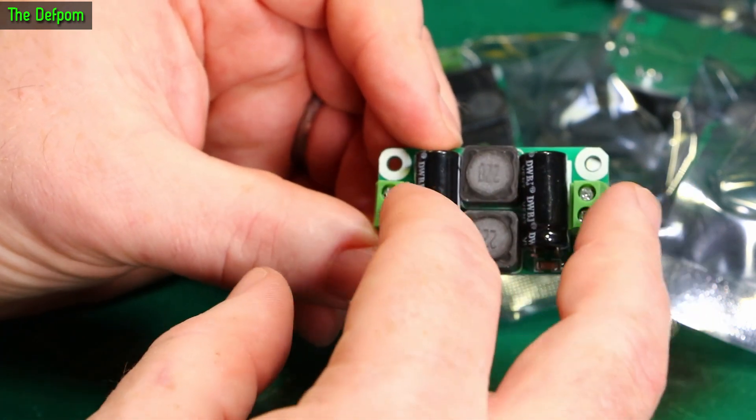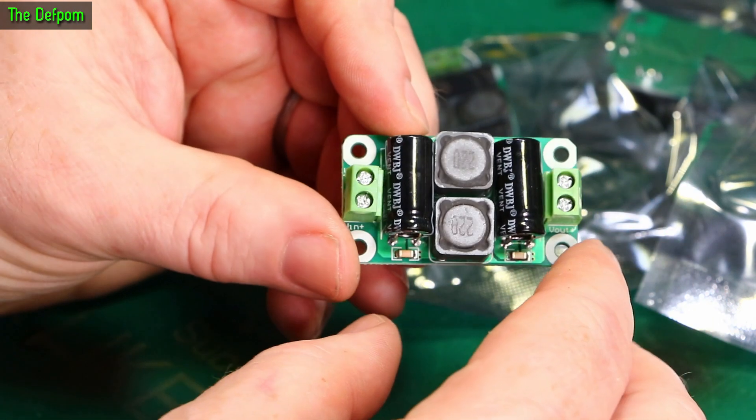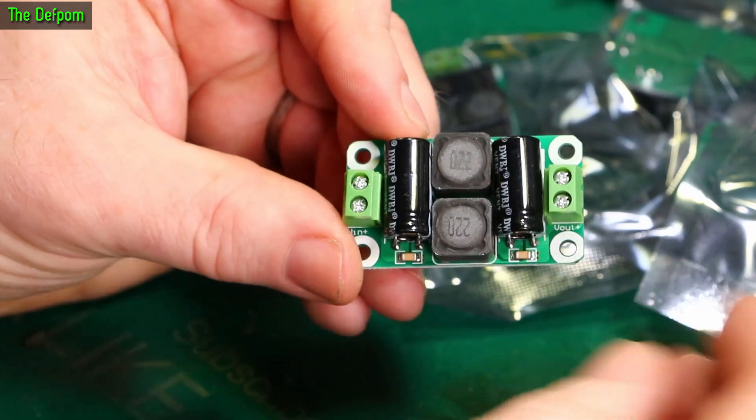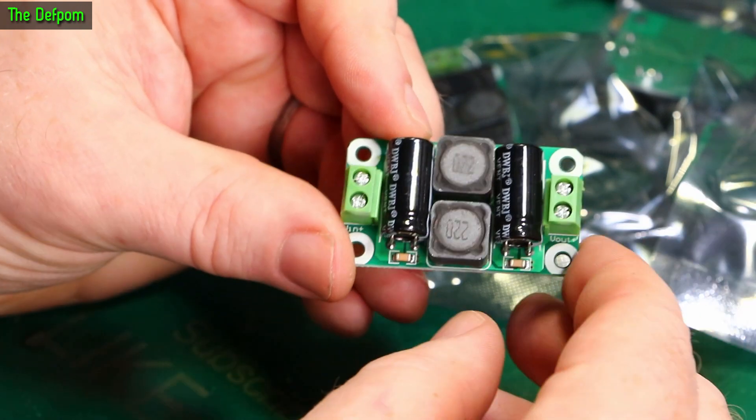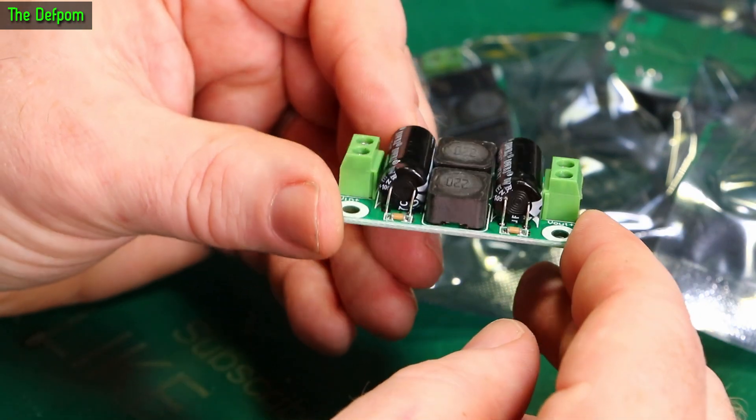So I want to put some of these on all my switch mode power supplies, which run my studio stuff basically, and try and quieten all those down. If I can get those quietened down, I should get less noise on the oscilloscope when I'm trying to do sensitive measurements.